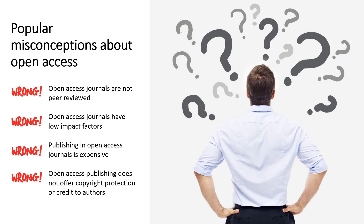As mentioned at the outset, authors are often unsure about publishing open access. This is largely due to some popular misconceptions about open access. Let us try to dispel some of these myths. Myth one: open access journals are not peer-reviewed. This is an absolutely wrong idea. A journal's peer-review policy has nothing to do with its access policy. Most open access journals are peer-reviewed.